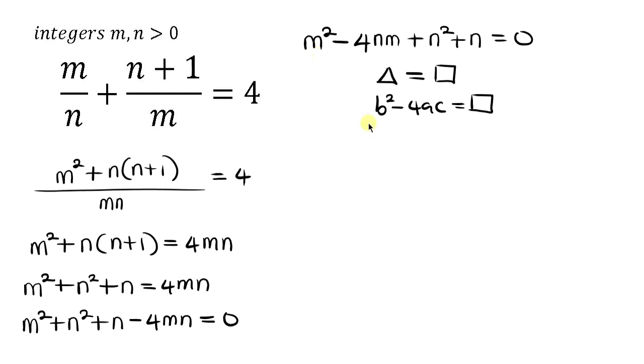So what is our b? Our b is negative 4n. So I'm going to be writing negative 4n. Remember, this is squared. So I'm going to be squaring this minus 4a. a is 1. That's the coefficient of m². So 4 times 1 times c, I'm going to be having 4. What is our c? Our c is what we have here, which is n² + n. And this must be a perfect square.